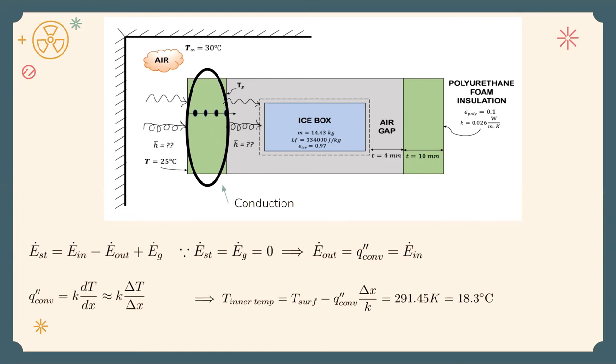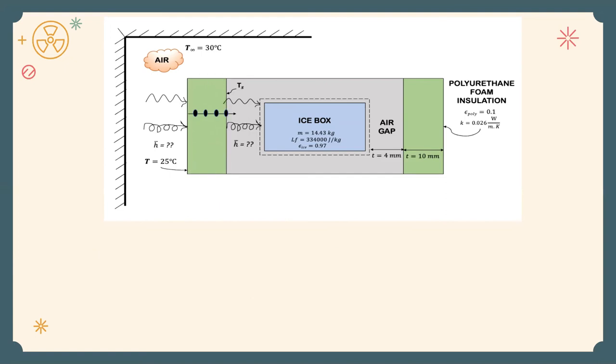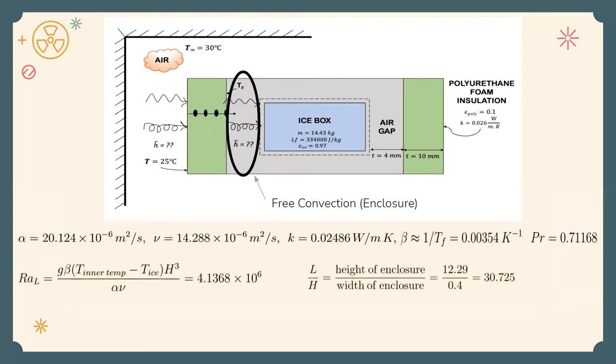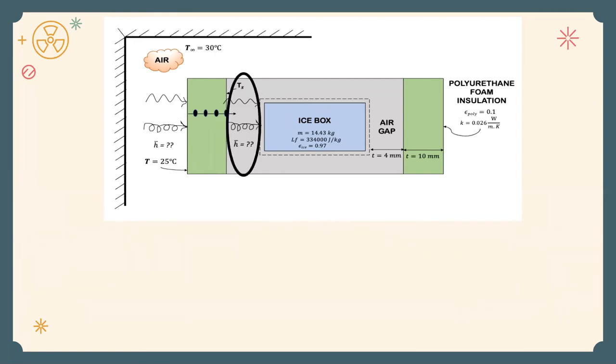We note that any heat that is incoming now will not be able to change the inner surface temperature but will now be used to melt the ice. Therefore in the air gap, there are two major modes of heat transfer. The first is free convection, which is modeled as an enclosure. Accordingly, the parameters of air at film temperature are followed. Once again, we calculate the Rayleigh number as well as the aspect ratio of the cavity. Based on these parameters, we are able to choose a suitable Nusselt correlation, the value of h-bar, as well as the heat transfer rate.